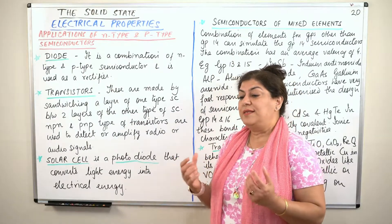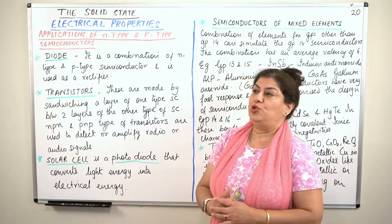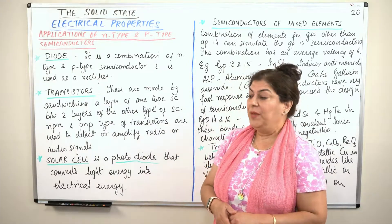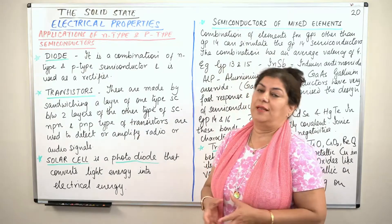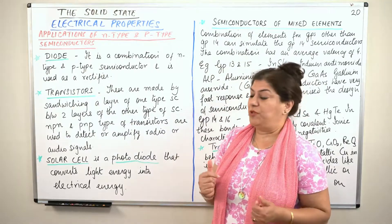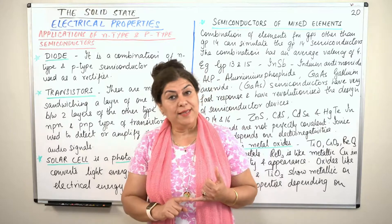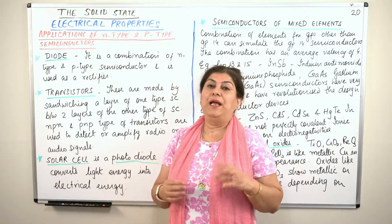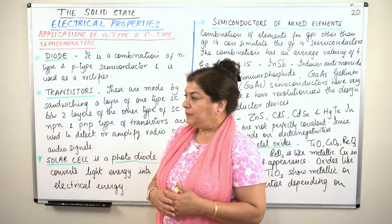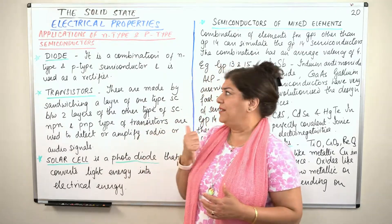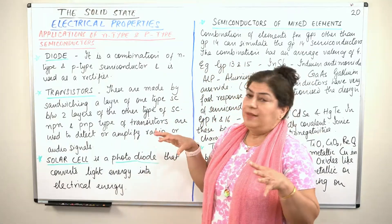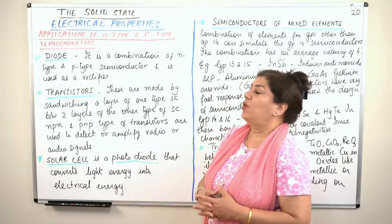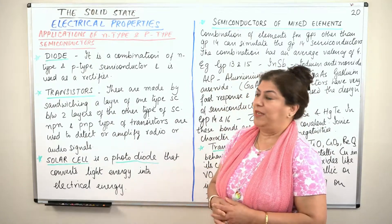So to make the semiconductor useful to us, we usually dope it with an impurity. And based on the impurities that they are doped with, we have two types of semiconductors: n-type semiconductor, that is negative type, and p-type semiconductor. In this video, we are going to be talking about the applications of the n-type and the p-type of semiconductors.